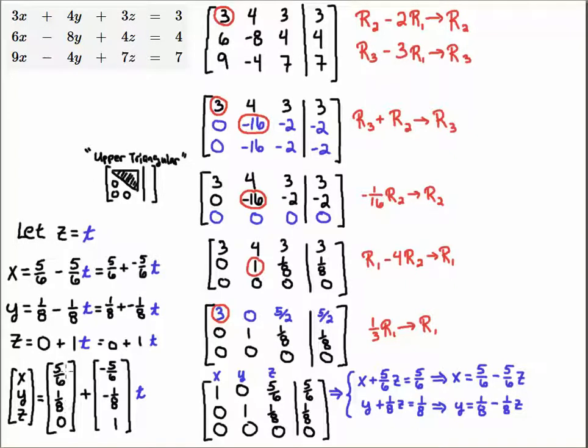And you notice that if you plug x is 5/6, y is 1/8, and z is 0 into this top equation here, you would see that you would get 3. So for example, 5/6 times 3 is 5/2, plus 4 times 1/8 is 1/2, and that's 6 - so 5/2 plus 1/2 is 6/2, and I get 3, and then this was 0. So 6/2 is 3, okay.